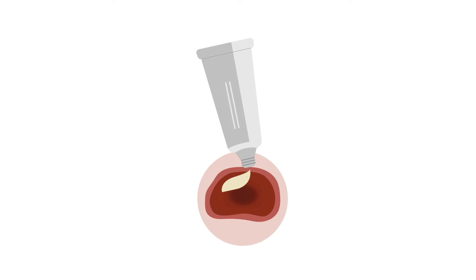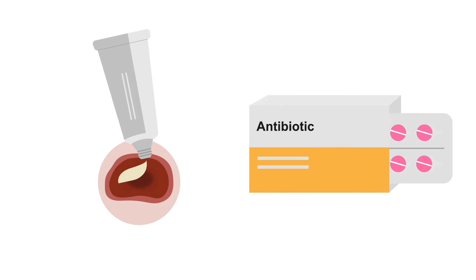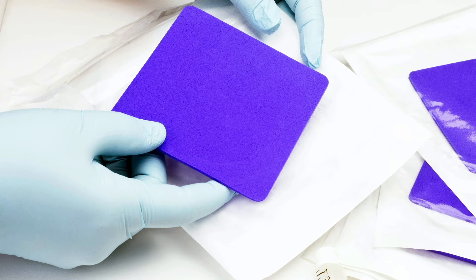Since it usually takes several days for a result, no matter which method is used to get the culture, treatment should be started empirically. Patients may be given either topical antibiotics applied to the wound bed, or oral antibiotics if there are signs that the patient is being affected systemically. Dressings with antimicrobial properties can also be used on the wound to improve the infection. There should be a high index of suspicion for infection before starting antibiotics to prevent the development of multidrug-resistant organisms.